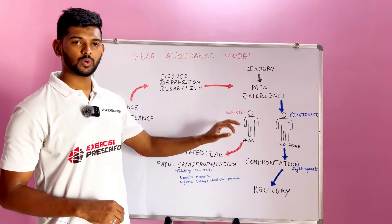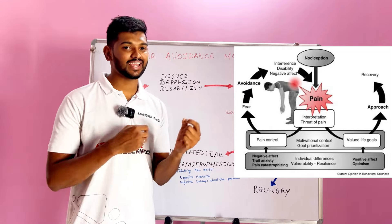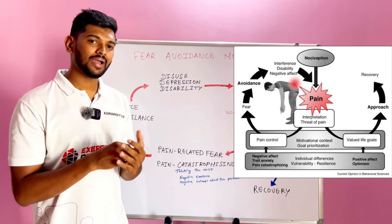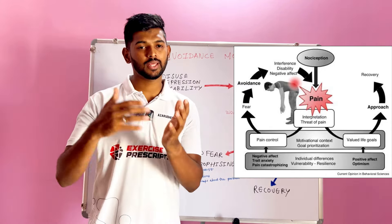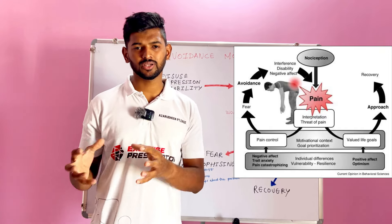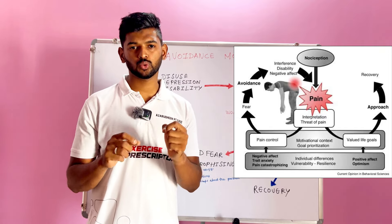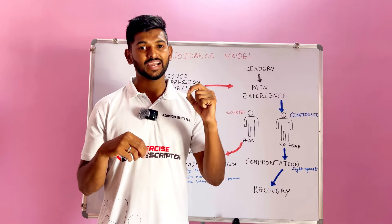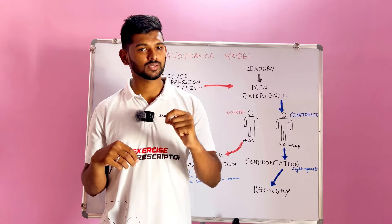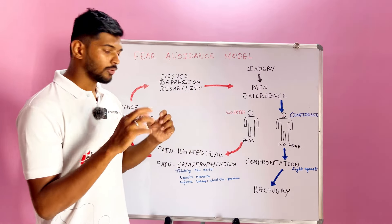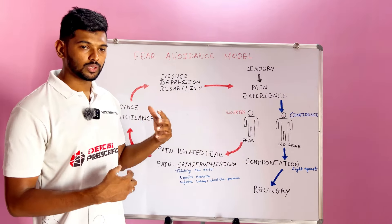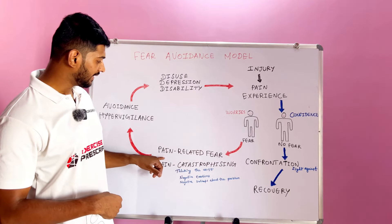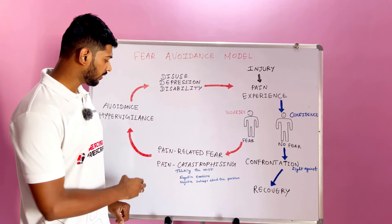If the person has fear towards that movement — worries, anxiety, negative beliefs — for example, someone has back pain and is unable to bend forward, immediately takes an MRI, the MRI shows a disc bulge, and the doctor advises: do not bend forward, take bed rest, if you bend forward you may face negative consequences. The person ends up having negative beliefs, worries, and a high amount of fear — pain-related fear.